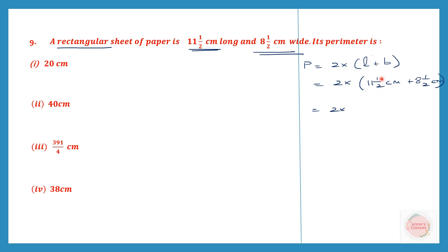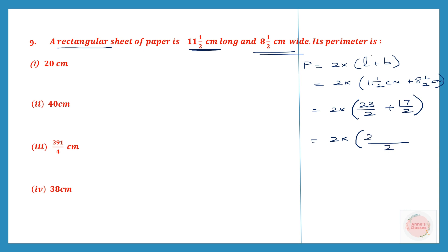Inside the brackets it is 23/2 plus. Now let's convert 8½ as well: 2 eights are 16, plus 1 is 17, so that is 17/2 cm. We continue: 2 into 23/2 plus 17/2. Both are like fractions with denominator 2, so we simply add the numerators: 23 plus 17 is 40. That gives 2 into 40/2.